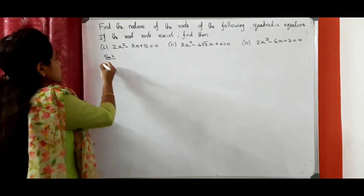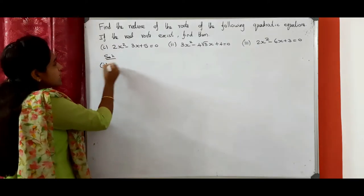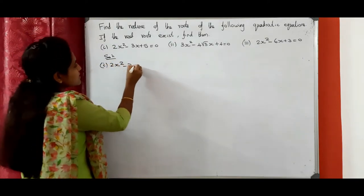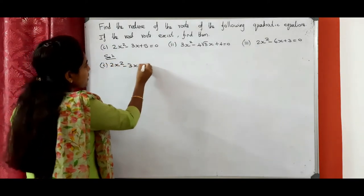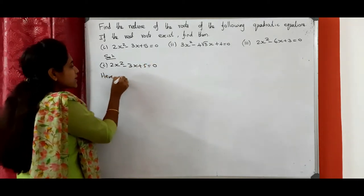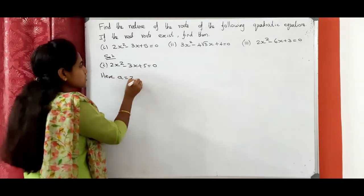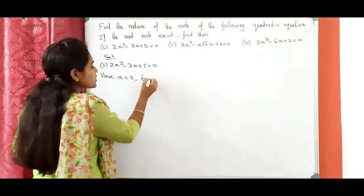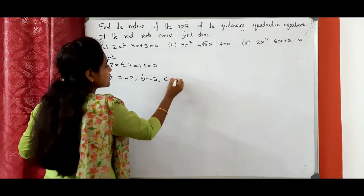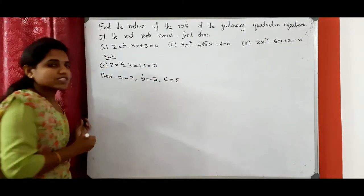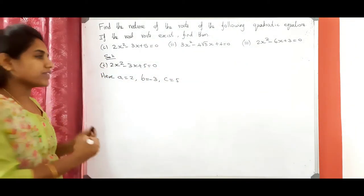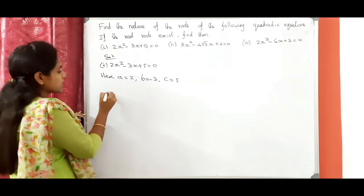For the first question: 2x squared minus 3x plus 5 equals 0. Here a equals 2, b equals minus 3, and c equals 5. First, we need to find the discriminant of the quadratic equation.